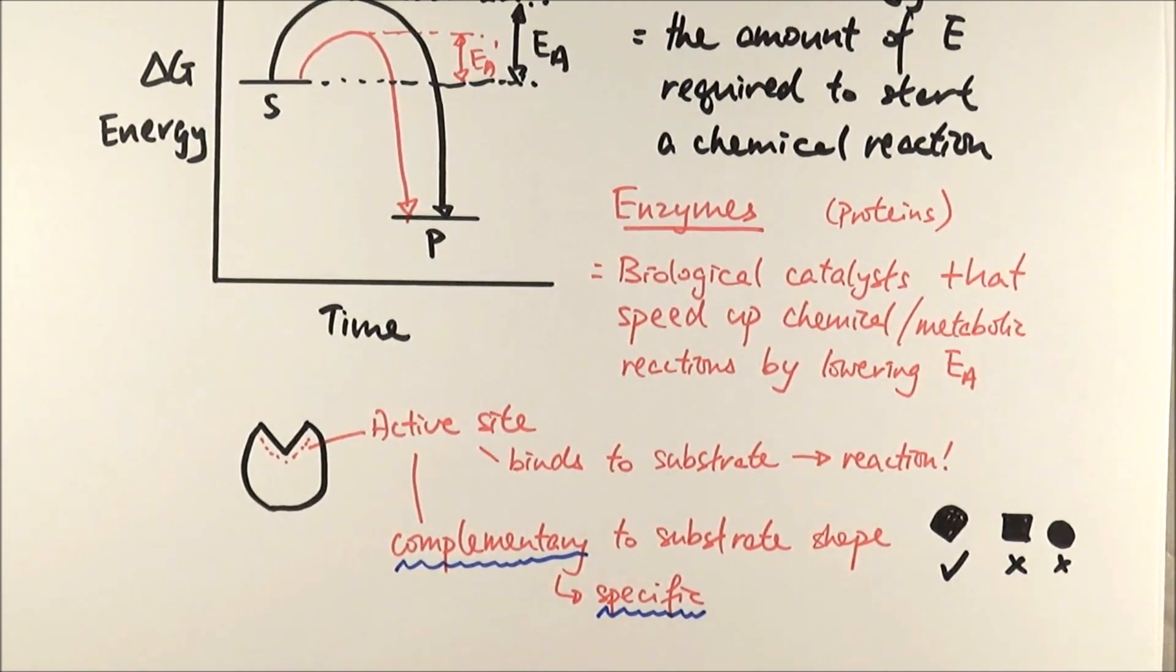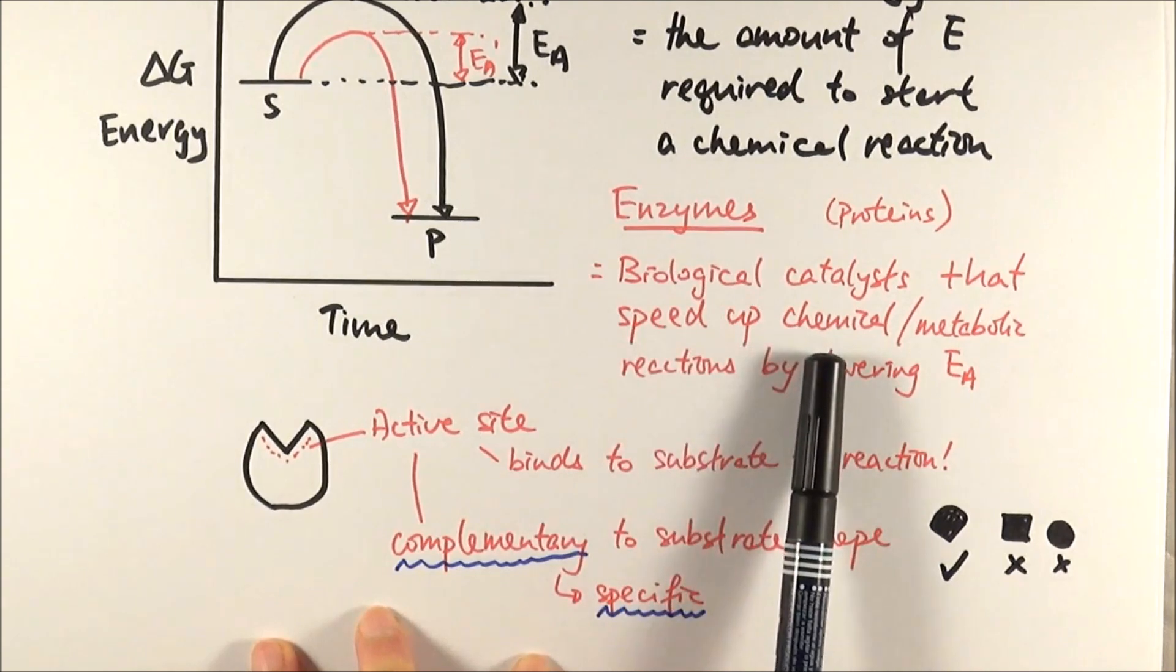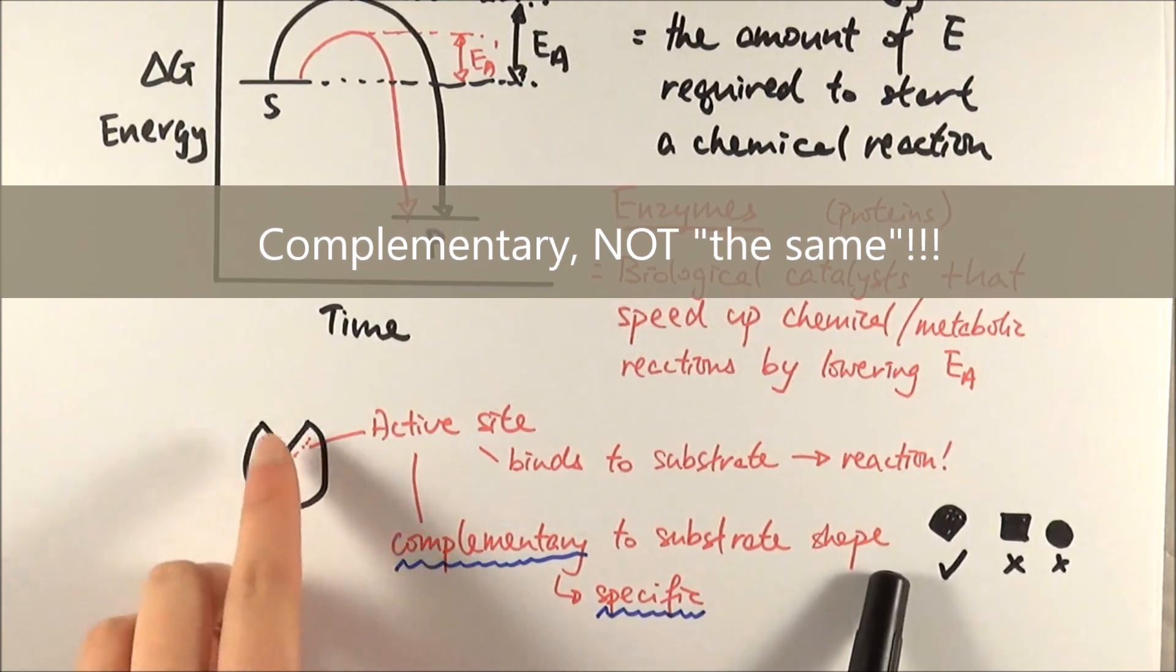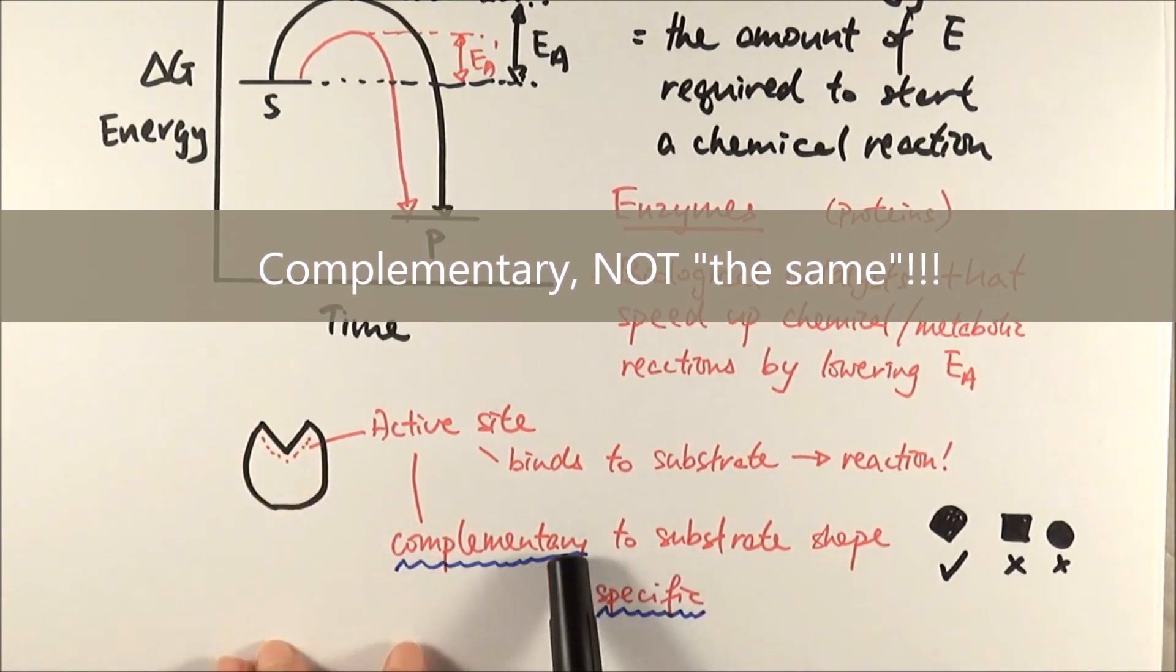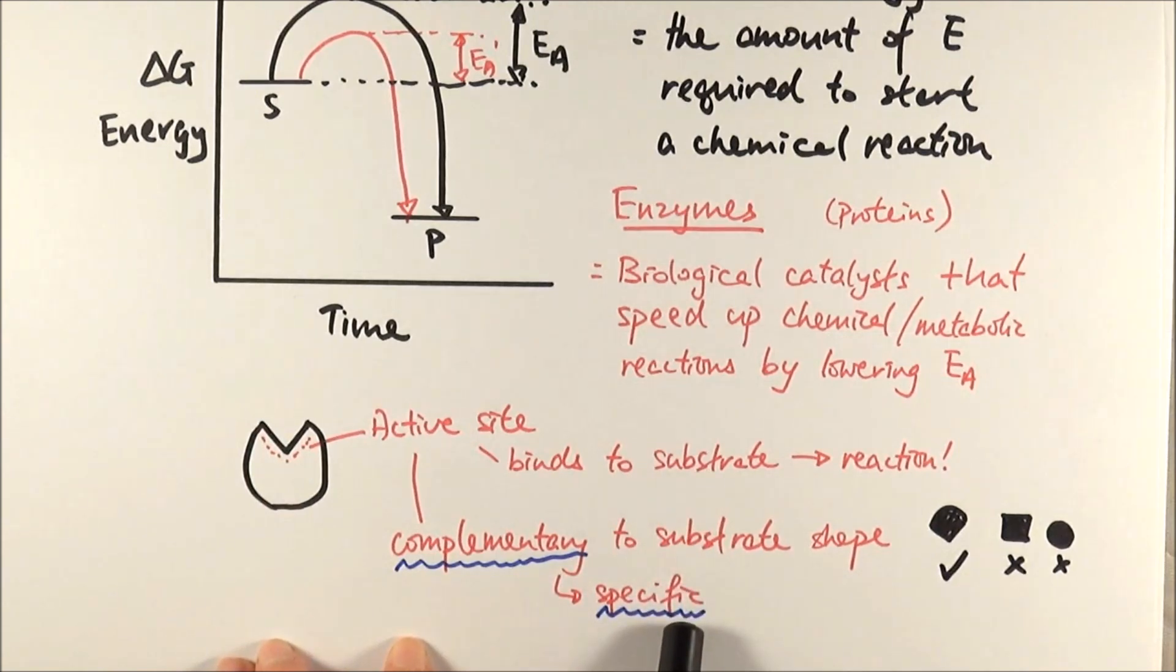In exams, it's really good to talk about a few things. Number one, they quite often ask about the definition, so just this particular bit will perhaps guarantee you two marks. When we talk about the active site, these are the keywords that you want to use. The fact that the active site shape is complementary, so the fact that they fit together like a jigsaw, it's complementary to the substrate shape, and therefore that makes the enzyme specific to individual substrates.